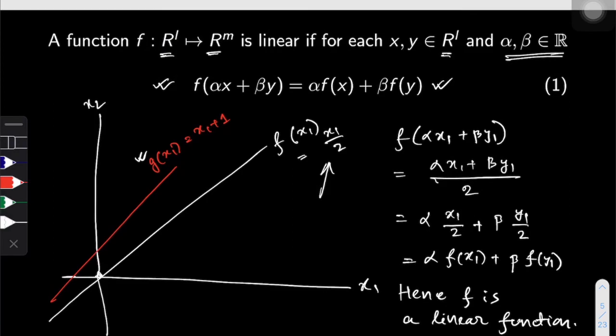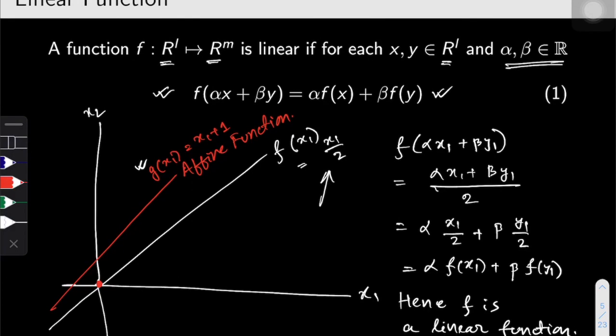Hence if we follow this definition carefully, we will see that a function that passes through the origin is a linear function, but a function that has an intercept is not a linear function. But instead what g here is, it is an affine function. So in this video we take a look at the concept of linear function and its definition.